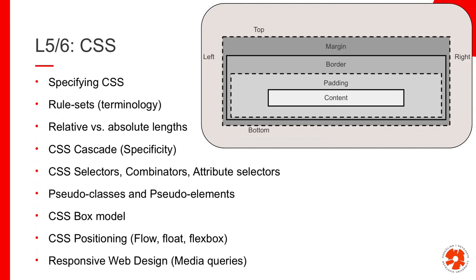The next block was on CSS — Cascading Style Sheets. We covered how to specify CSS internally, inline, or externally; the terminology of rule sets and declarations; and how the cascade is determined — which declaration wins when multiple conflicting ones exist. We looked at how to select elements using combinators, attribute selectors, pseudo-classes, and pseudo-elements. We also discussed relative versus absolute lengths and their respective advantages and disadvantages.